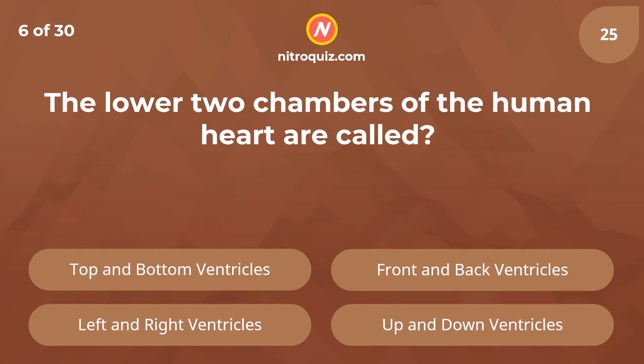The lower two chambers of the human heart are called — answer is left and right ventricles.